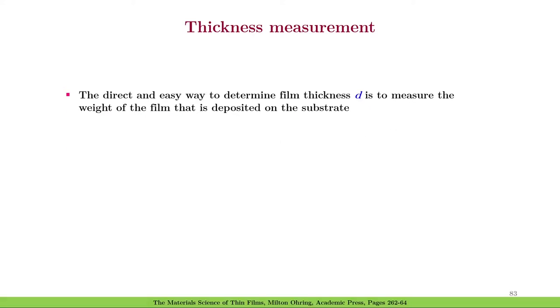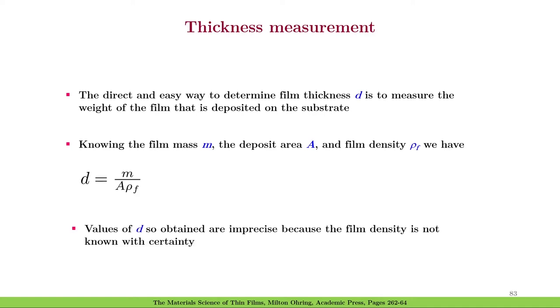The direct and easy way to determine film thickness d is to measure the weight of the film that is deposited on the substrate. Knowing the film mass m, the deposit area A and film density ρf, we can calculate its thickness d as equal to m over A times ρf. Values of d so obtained are imprecise because the film density is not known with certainty.